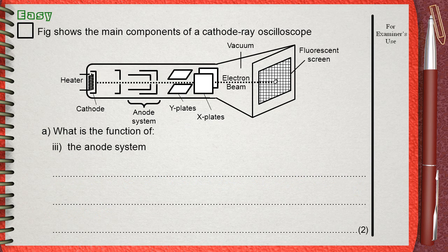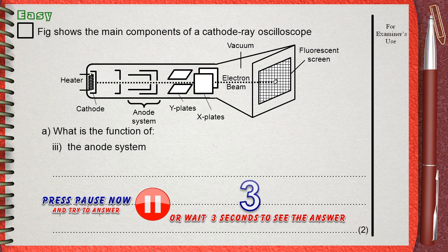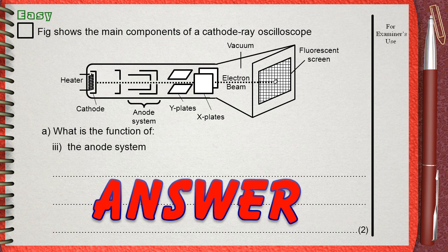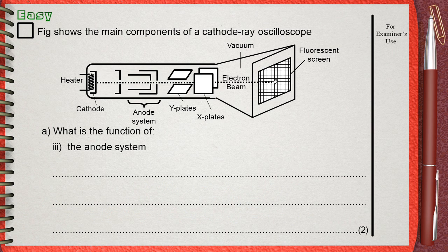Question triple I. What is the function of the anode system? And this is for two marks. The anode system, which is composed of two hollow tubes, these anodes are connected to a highly positive potential from the DC power supply.